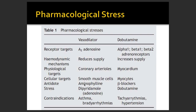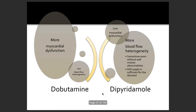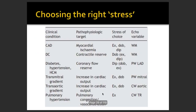Dobutamine, dipyridamole, or adenosine can all be used for stress. There are contraindications: for adenosine, if someone has a low heart rate or asthma, you should not use it. For dobutamine stress echo, if someone has tachycardia or hypertension, it's not ideal. It is very important to understand the indications and contraindications before ordering any test.